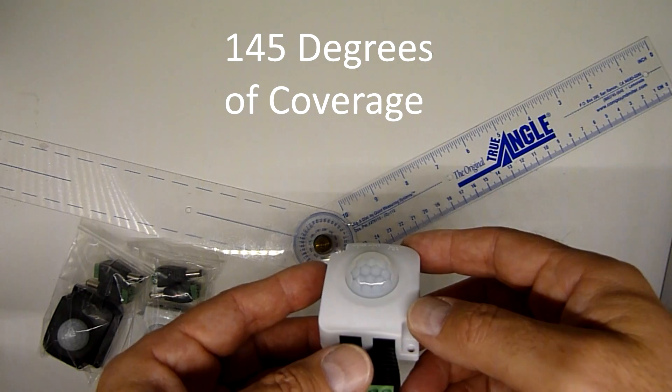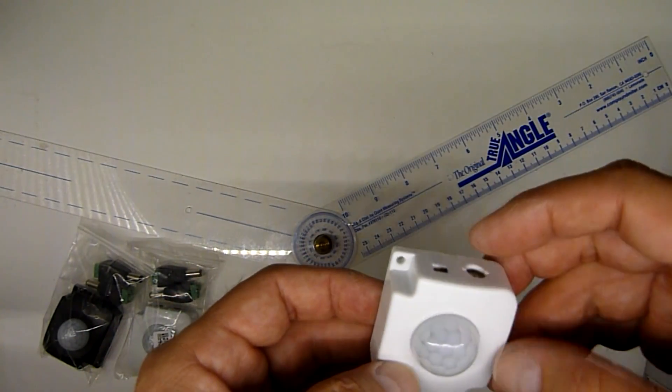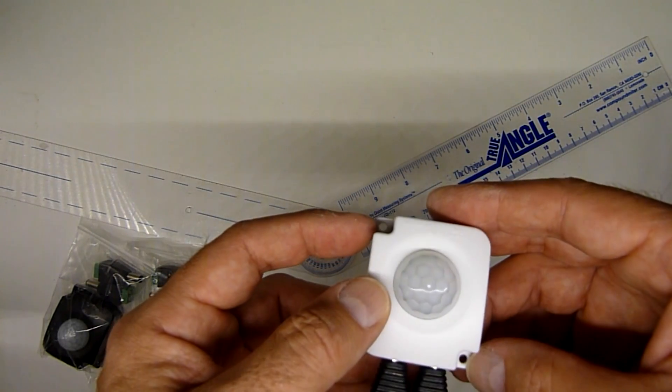This unit has 145 degrees of coverage. The mounting option on this is a fixed mount unit with two holes on the side. It'll hold about a number four, number six screw.